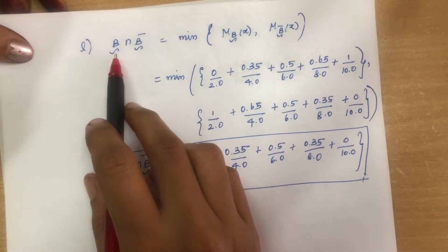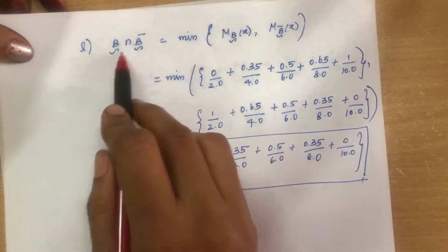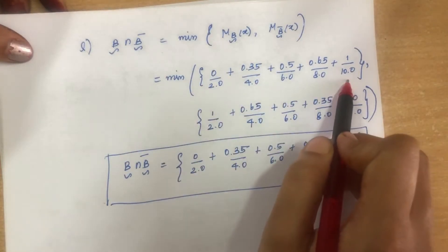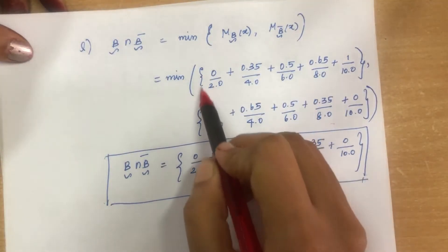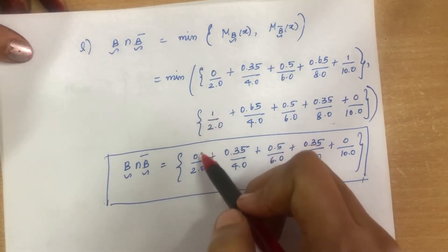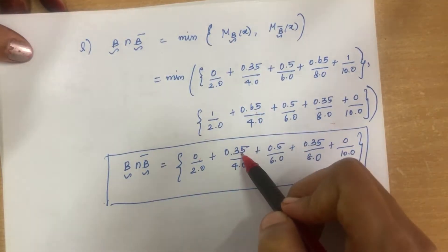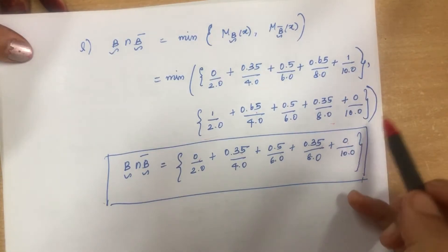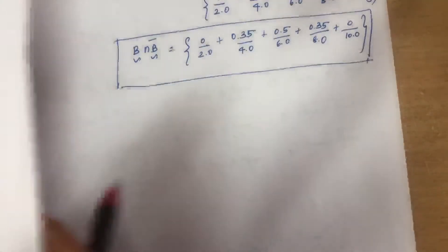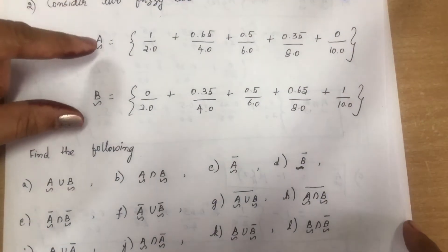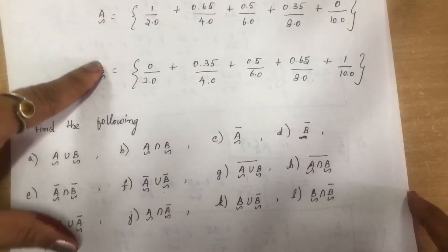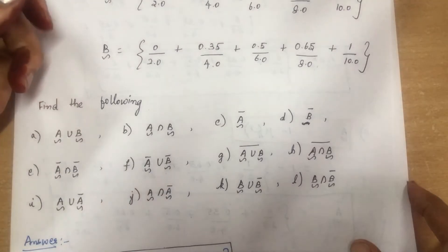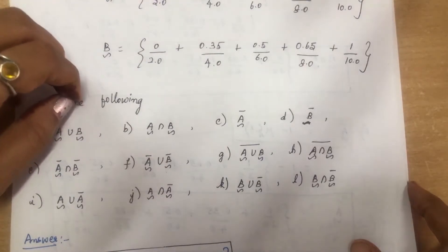For B intersection B bar, we take minimum of membership value of B and B complement. Comparing: min(0,1)=0, min(0.35,0.65)=0.35, min(0.5,0.5)=0.5, min(0.65,0.35)=0.35, min(1,0)=0. This is how you solve problems using fuzzy sets — by taking maximum, minimum, or applying the complement formula.